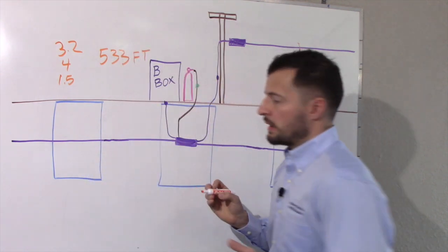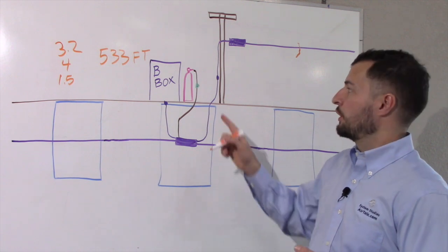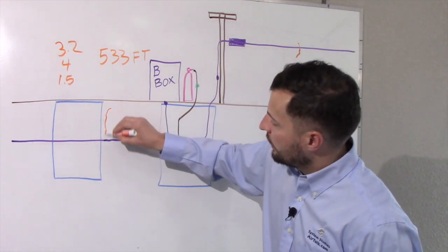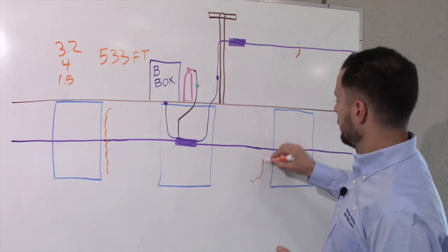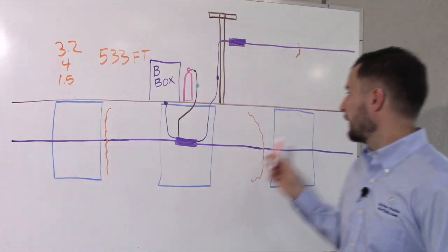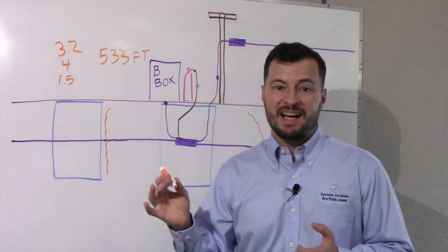What this means is that our leak is no further than 533 feet away from our area of measurement. So if this is our area 533 feet from our area of measurement, then there's no point in looking in this manhole here or here, because the leak we're looking for is not going to be there.